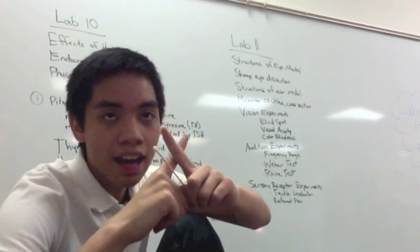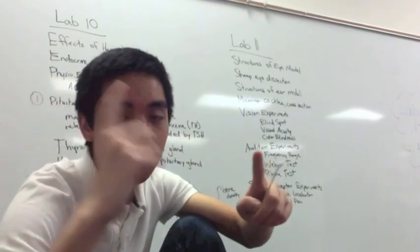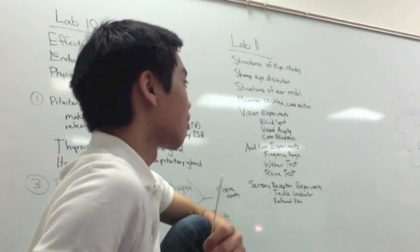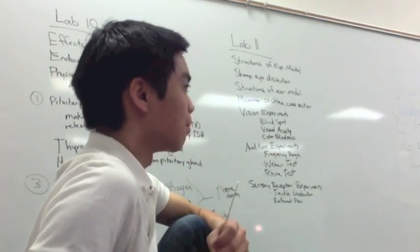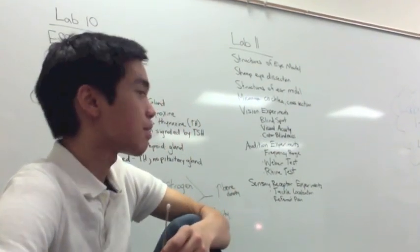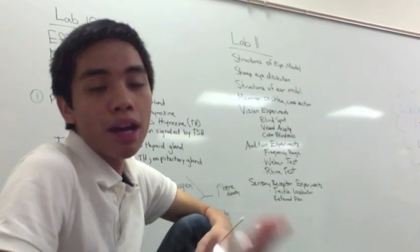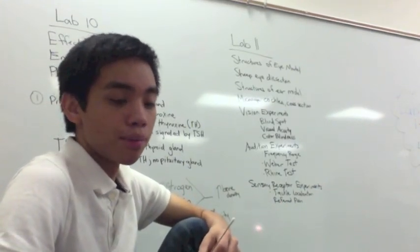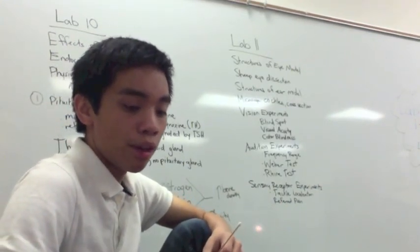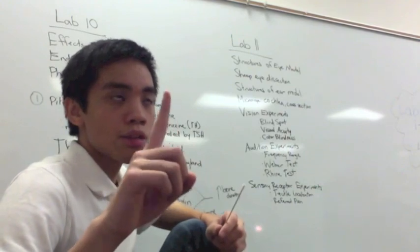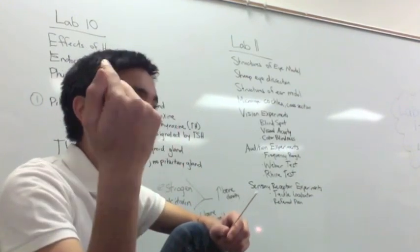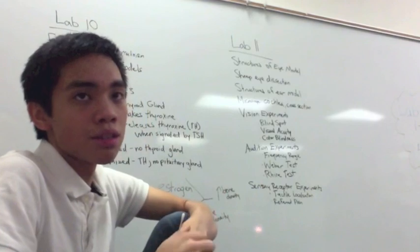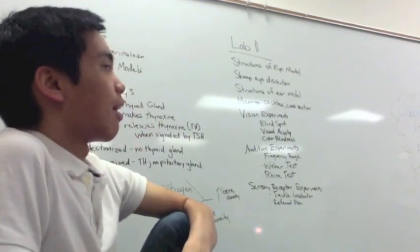The blind spot test is where you had an X and a dot, you focus on the dot, and in your peripheral vision the dot disappeared. You need to know the process of how to test that, where the blind spot is located in your eye, and why you can't see it — because there are no receptors in that area.